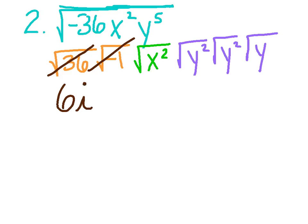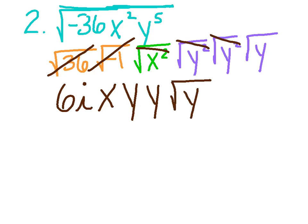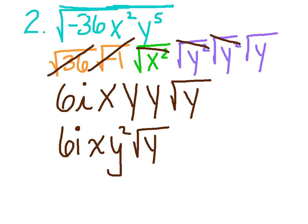The square here and this radical cancel each other, and that becomes a y. Again, this radical and that squared cancel, and that becomes a y. And lastly, nothing cancels on that last term, so I'm going to leave that as radical y. One more final step: I'm going to put any of my like terms out front together. So I've got 6i, x, and y squared, and I'm left with radical y.